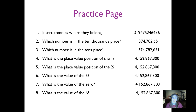Let's do some practice problems. In your journal, number from one to eight and write in the answer. Pause after I read the instructions, fill in your answer, then push play and keep going to check your answer. Number one: insert commas where they belong in the following number. Did you put a comma here and here and here? You need to put your thousands comma first, then count three more digits for the millions comma, and three more for the billions comma.